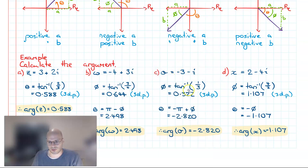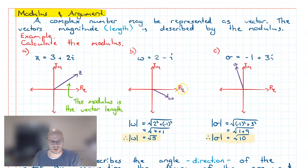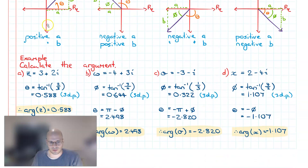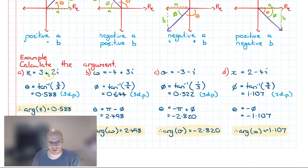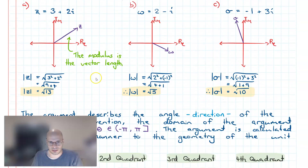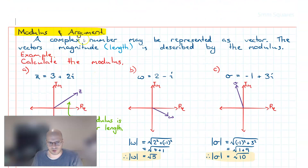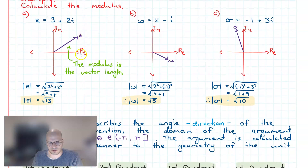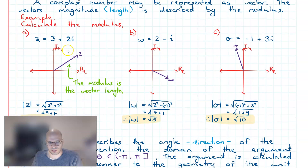In summary, in this lesson we looked at how to calculate the modulus and the argument of complex numbers, and how the modulus and argument represent the length and the angle of a complex number respectively.